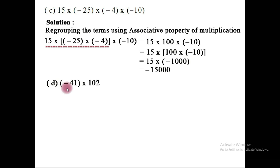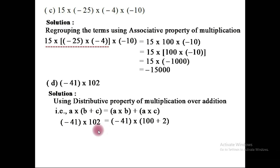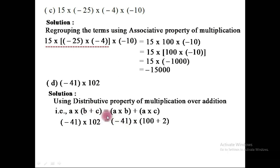Sub number D: minus 41 multiplied with 102. We can find the value of this product by using the distributive property of multiplication over addition. Here the integer 102 will be split into two terms as the sum: 102 is split into 100 plus 2. Now we get the expression in the form of the left-hand side of the distributive property: in place of A we have minus 41, in place of B we have 100, and in place of C we have plus 2.